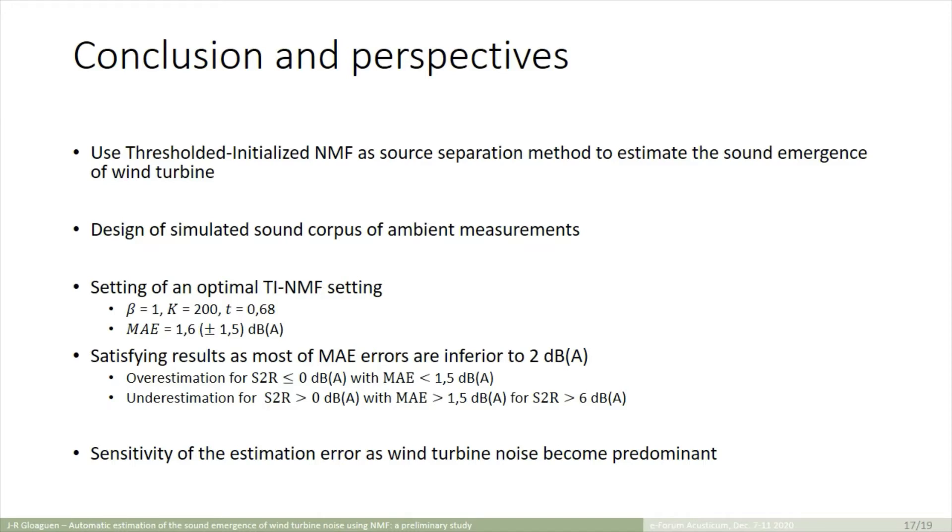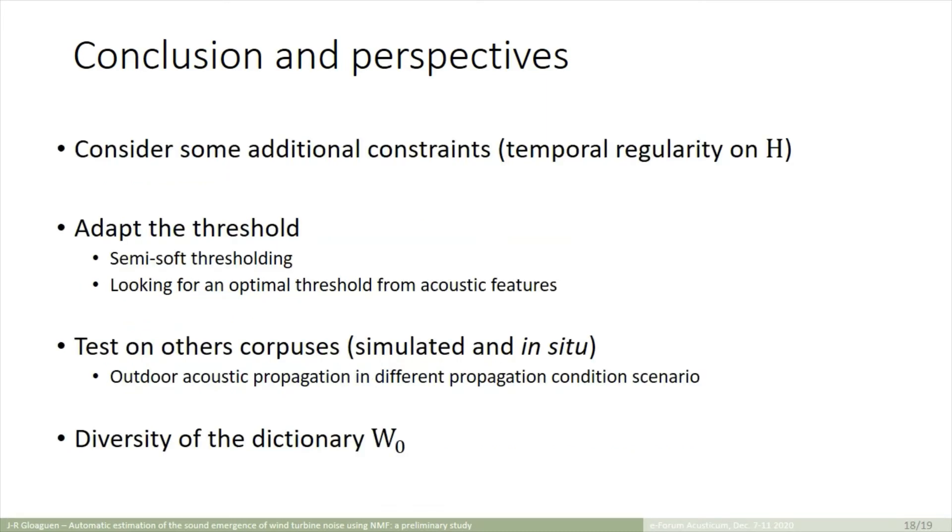However, TI-NMF generates over- or underestimation depending on the wind turbine noise predominant, because of the fixed threshold, and because of the sensitivity. For instance, for S2R superior to 6 dBA, we saw that the emergence estimation is very sensitive, despite a low error on the wind turbine noise.